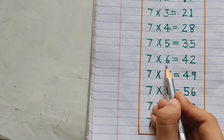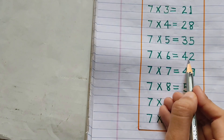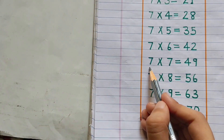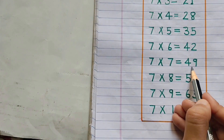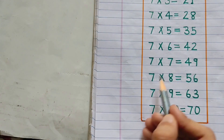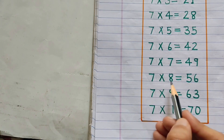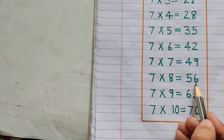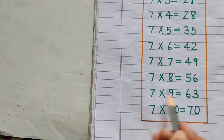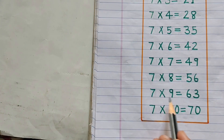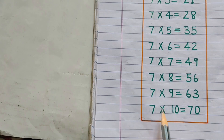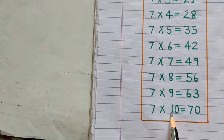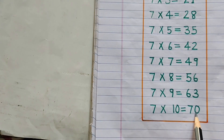7 6s are 42. 7 7s are 49. 7 8s are 56. 7 9s are 63. 7 10s are 70.